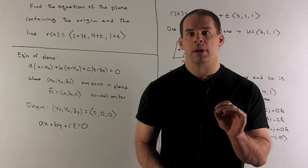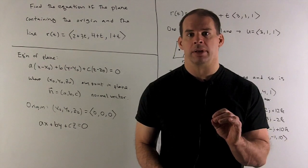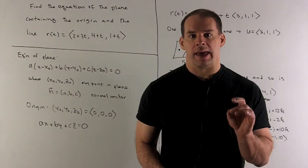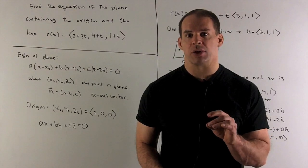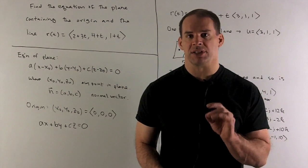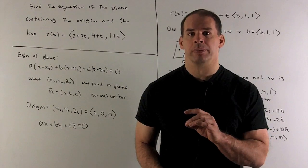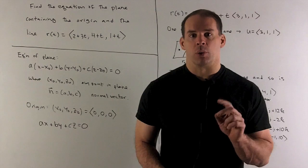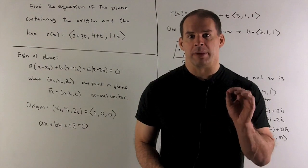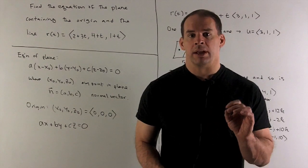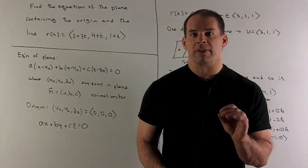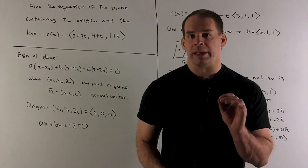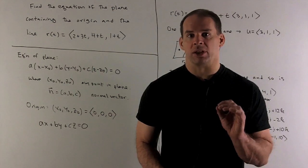We start by writing down the equation of a plane. So that'll be given by a(x minus x0) plus b(y minus y0) plus c(z minus z0) equals 0. Here, x0, y0, z0, that can be any point in the plane. And then a, b, and c, those are the components of a normal vector. The normal vector will be any vector that's perpendicular to our plane.